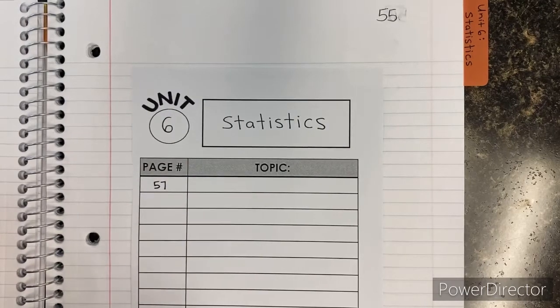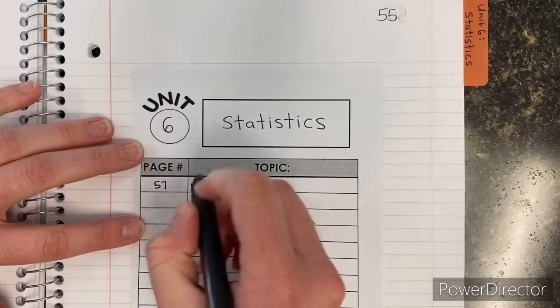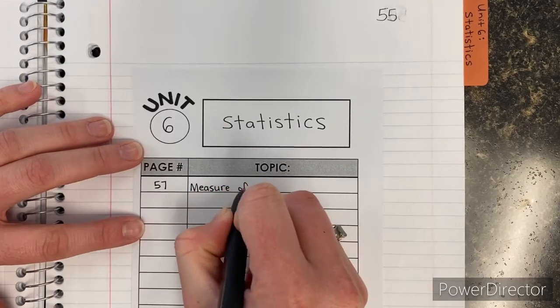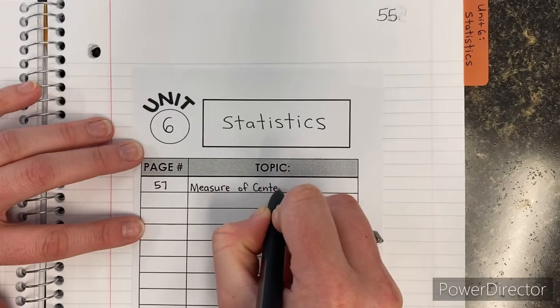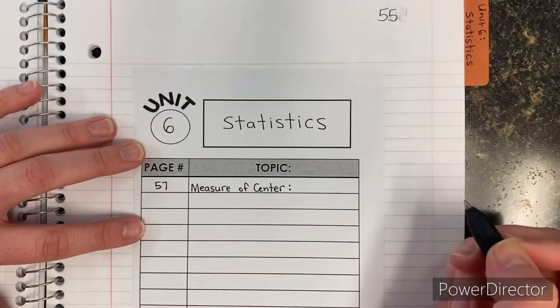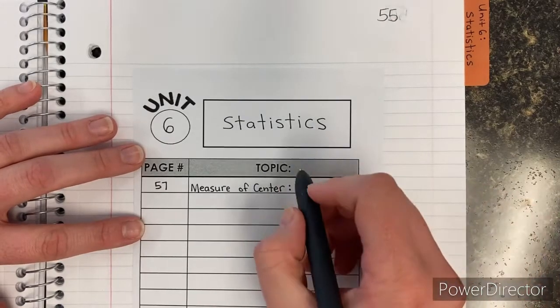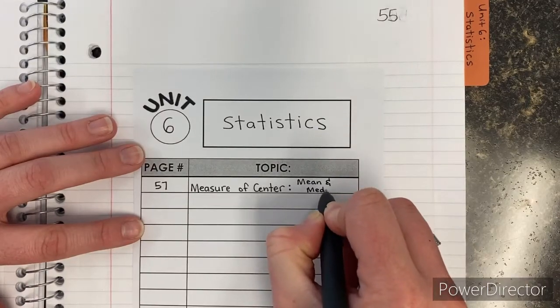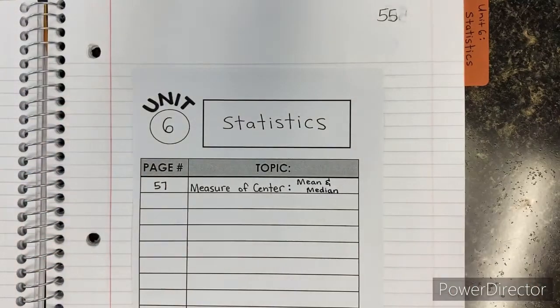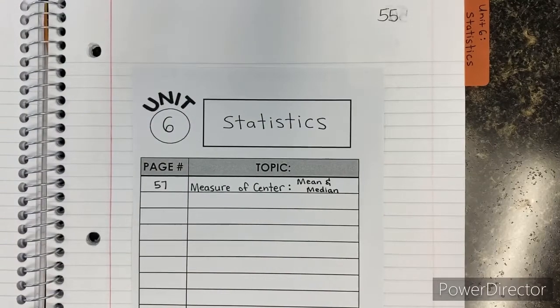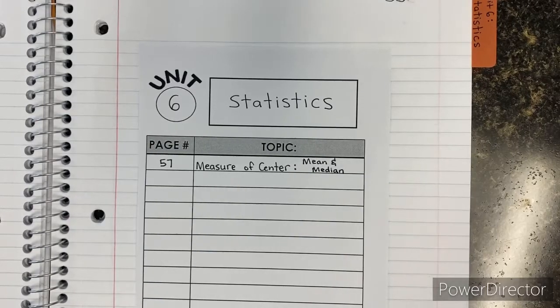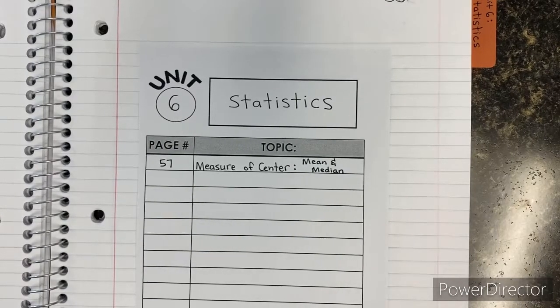And the title of this, you might want to write a little bit small, is Measure of Center. And there are two that we really talk about in Algebra 1, and it is Mean and Median. Those may sound like familiar terms because this is a really important standard in 6th grade. So you should have talked about Mean, Median, Mode, and Range. These are just the two that we talk about in Algebra 1.